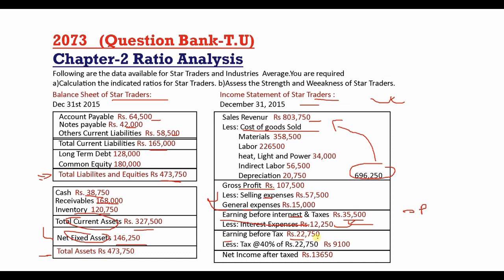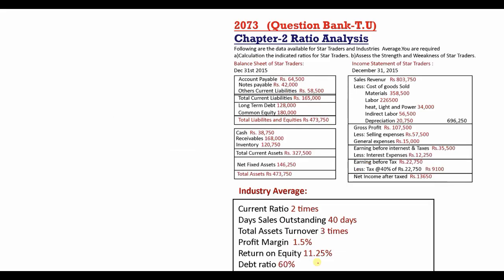The tax rate is 40% and the tax amount is $9,100. The net income is $13,650.